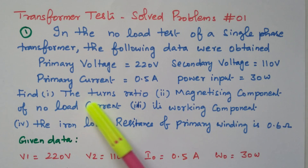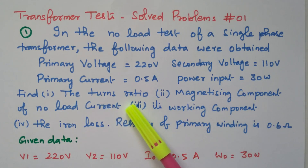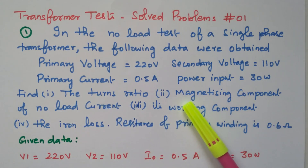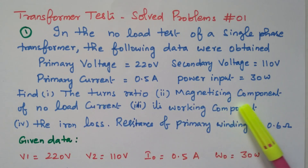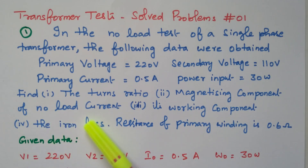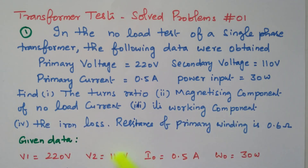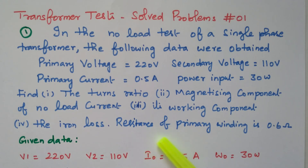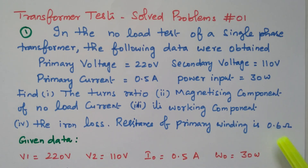Find: first, the turns ratio; second, the magnetizing component of no-load current; third, the working component; fourth, the iron loss. The resistance of the primary winding is 0.6 ohm.